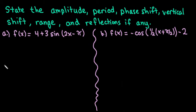Hi, for this video we have two examples where we're going to state the amplitude, period, phase shift, vertical shift, range, and reflections if any. This is an important concept to master, especially if you're taking a class with an online homework platform that asks for these things specifically to graph sine or cosine waves. We're going to talk about all of these in the video.